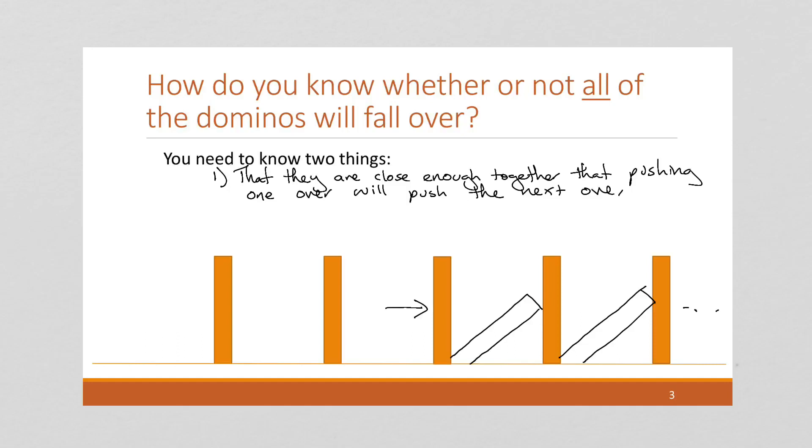The second thing we need to know is that the first domino gets pushed over. Because remember, all the dominoes are equally spaced, and if they're close enough that pushing one over pushes another over, and we know that first one gets pushed over,